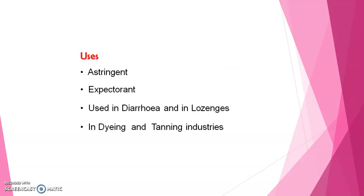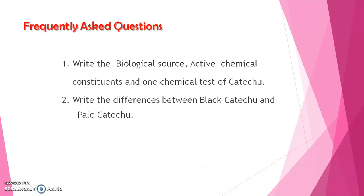Uses of pale catechu: it is an astringent, expectorant, used in diarrhea, and in lozenges preparation, and in the dyeing and tanning industry. Frequently asked questions on this topic include: write the biological source, active chemical constituents, and one chemical test of catechu, and the difference between black catechu and pale catechu.